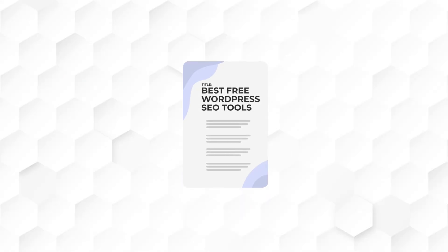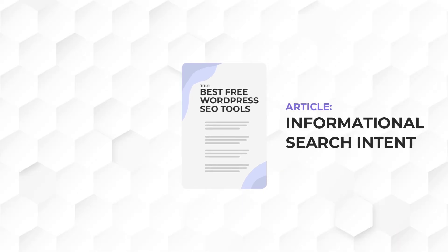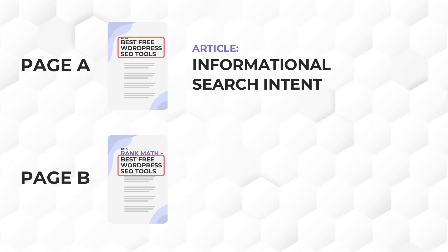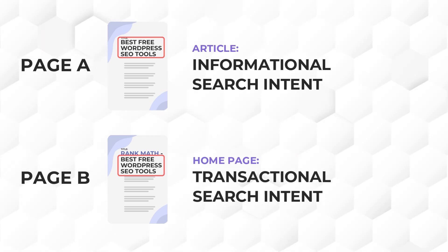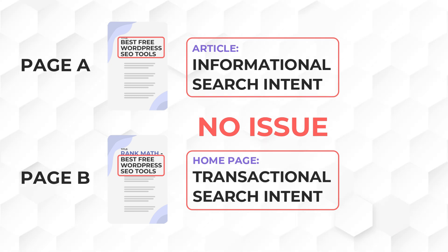The simple definition of keyword cannibalization is two or more different pages trying to rank for the same keyword. But what if those pages have different search intent? For example, page A targets 'Best Free WordPress SEO Tools' as an informational article comparing tools, while page B targets the same keyword but it's the Rank Math homepage where the keyword is its slogan — a transactional intent. In this case, it is not considered keyword cannibalization because they have different search intent.